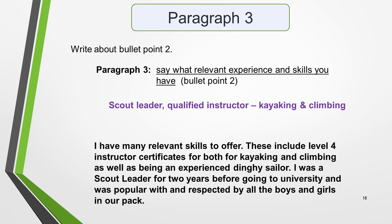The third paragraph should cover the second bullet point, which is to say what relevant experience and skills you have. My idea for this is being a scout leader and qualified instructor in kayaking and climbing. You could write something like this: 'I have many relevant skills to offer. These include level 4 instructor certificates for both kayaking and climbing, as well as being an experienced dinghy sailor. I was a scout leader for two years before going to university, and was popular with and respected by all the boys and girls in our pack.'